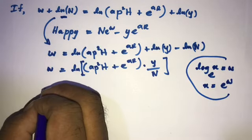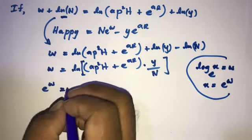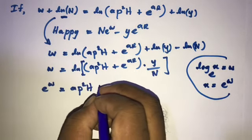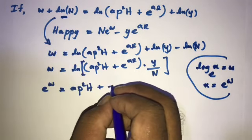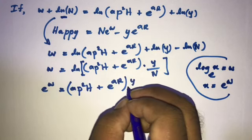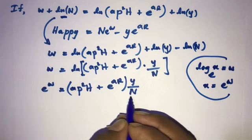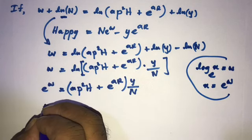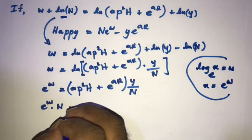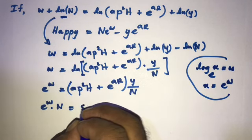According to this, we can write e to the w is equal to ap squared h plus e to the ar, times y over n. Now we can multiply by n, so e to the w times n is equal to...